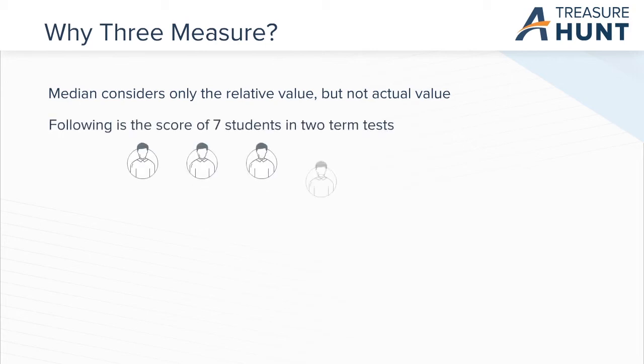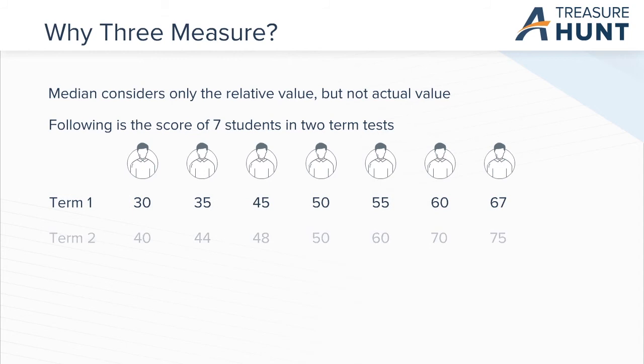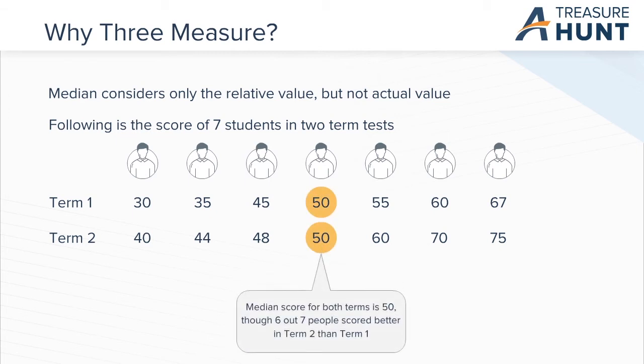On the other hand, the problem with median is that it does not consider the actual values in the data set, and instead looks at ordering only. Look at this example of the scores of seven students from their Term 1 and Term 2 examination results. You will notice that all students, except Student 4, have higher Term 2 scores. Yet the median for both Term 1 and Term 2 is the same, 50. As you can see, while both mean and median are widely used measures of central tendency, you should be careful when trying to come to any conclusions using them.